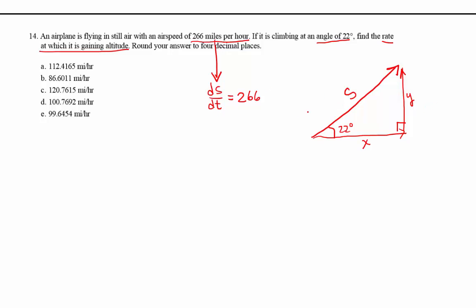Because what rate are we trying to find? The rate at which it's gaining altitude, which is dY/dT. That's what we're trying to find. So we need a relationship between dS/dT and dy/dT. We can use a relationship between S and Y to get it. So what's the relationship based on this angle? What's the relationship between S and Y? Sine is opposite over hypotenuse, right?